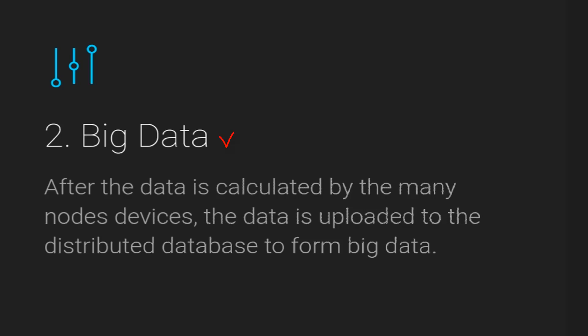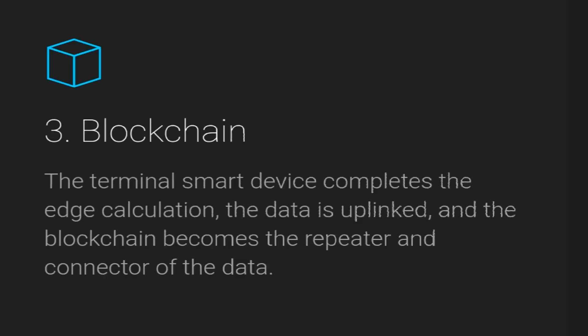The second feature of Hawk Network is big data. Data is very essential to node devices, distributed databases, and any assets that run on information technology. Hawk Network provides data that is calculated by many node devices and uploaded to a distributed database to form big data.